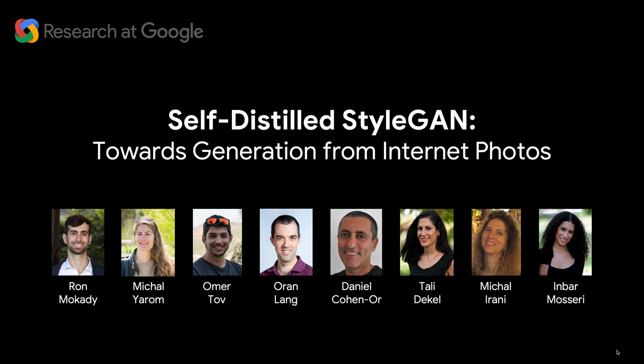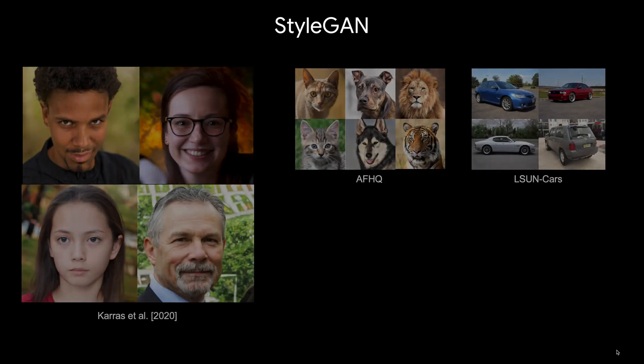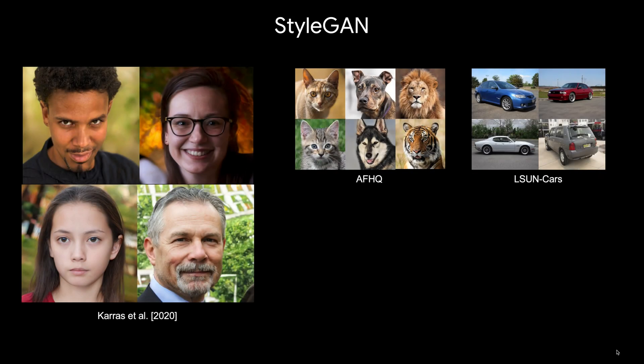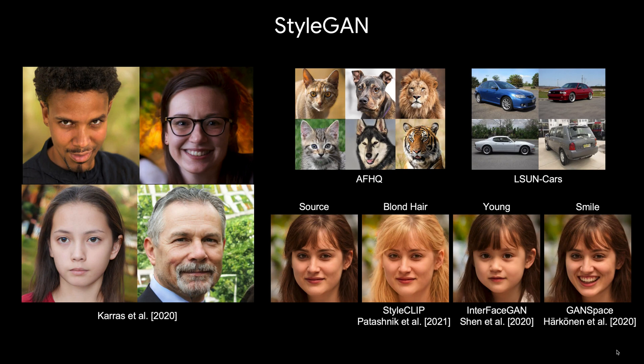In this paper, we show how StyleGAN can be adapted to work from raw, uncurated photos collected from the internet. StyleGAN is one of the most prominent generative models, known to produce high-fidelity images while also offering unprecedented semantic editing. However, these fascinating abilities have been demonstrated only on a limited set of datasets, which are usually structurally aligned and well-curated. Since such manually curated datasets are rare, employing StyleGAN over different domains is rather limited.